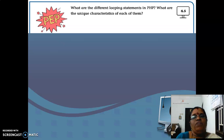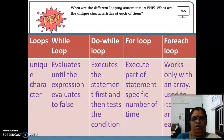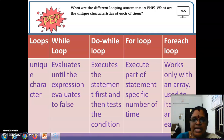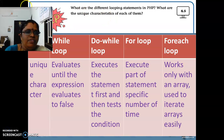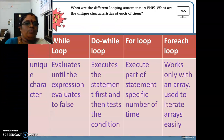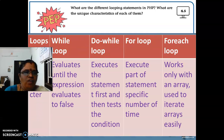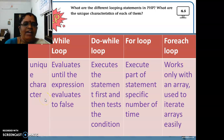Pep activity 4.5: what are the different looping statements in PHP and what are the unique characteristics of each of them? So what are the looping statements? These are all called as loops: while loop, do while loop, for loop, and for each loop.